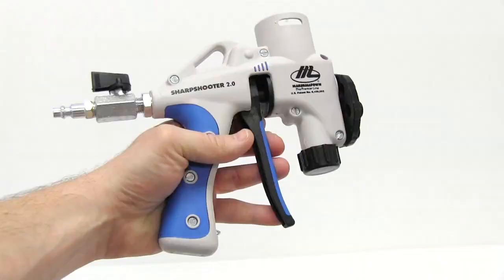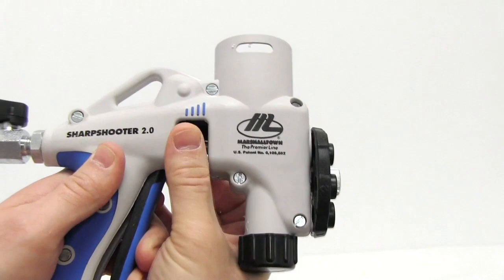Marshalltown's Sharpshooter 2.0 Hopper Gun is upgraded with many features and benefits. The Sharpshooter 2.0 is equipped with a soft grip handle and trigger.